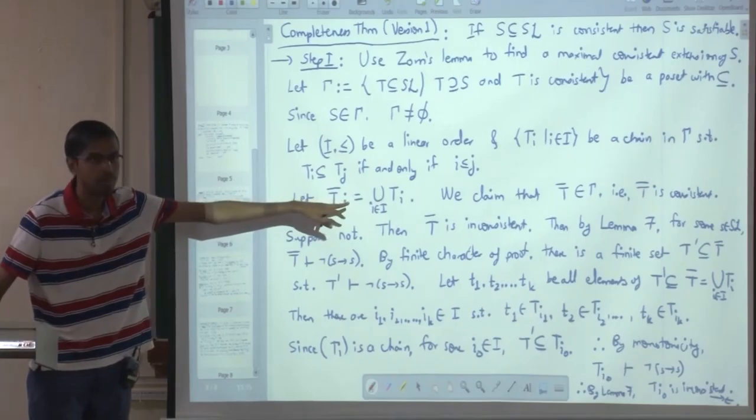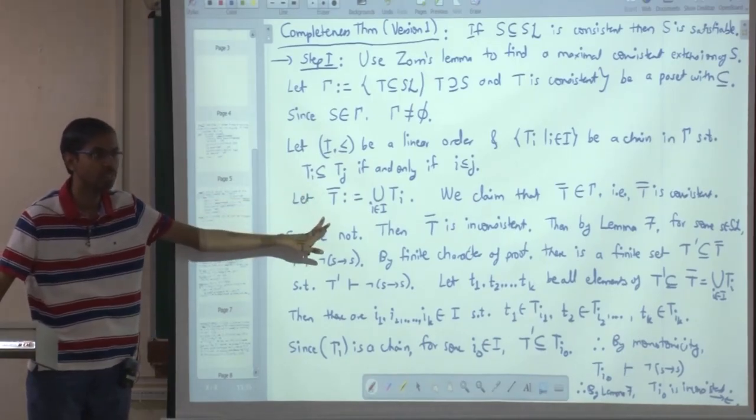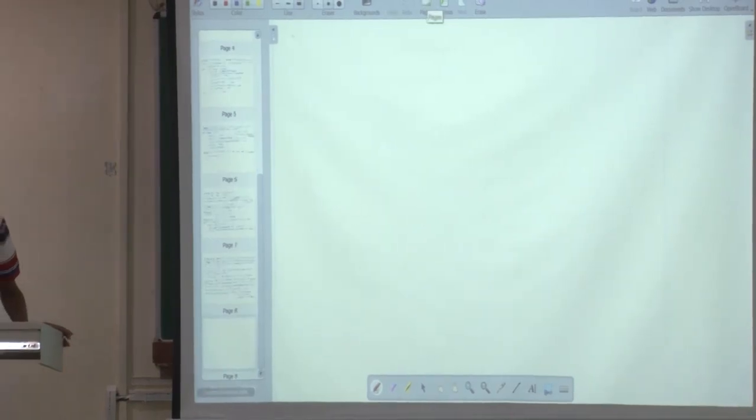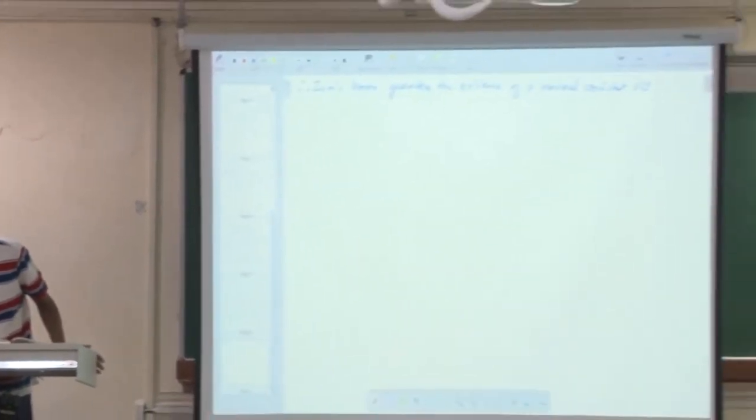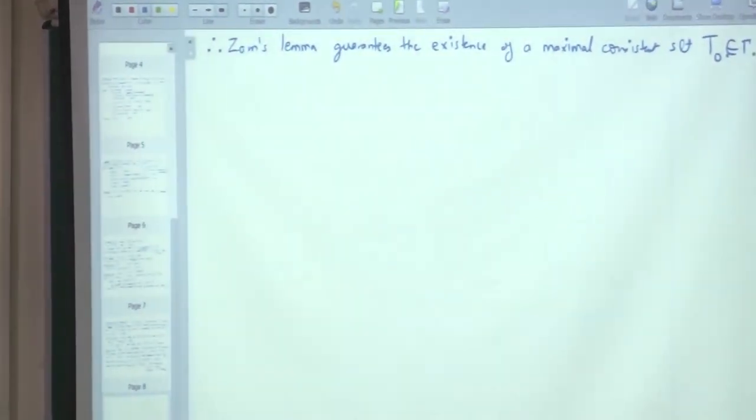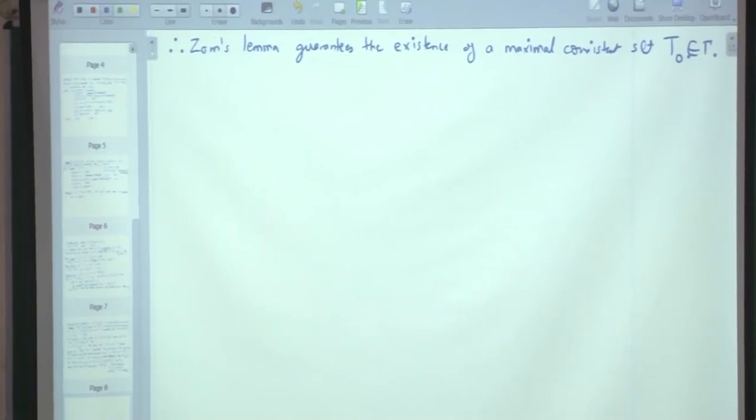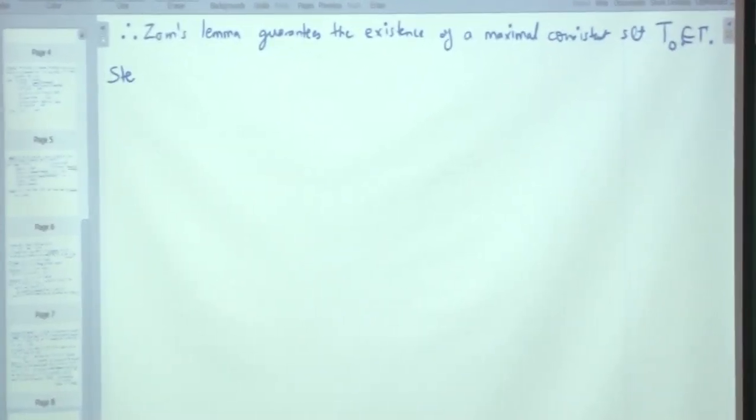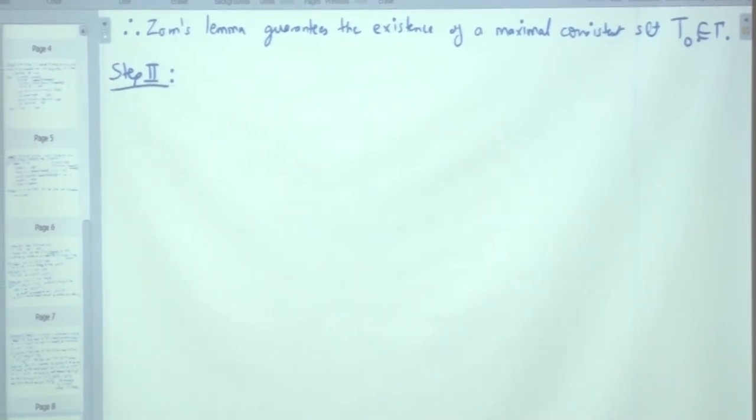Got this? So we have shown our claim. So every chain has a maximal element. Sorry, every chain has an upper bound. And therefore by Zorn's lemma. So I am just going to write this statement now. Therefore, Zorn's lemma guarantees the existence of a maximal consistent set T₀ in Γ. I mean it is in Γ, which means it is consistent and also contains S. Now just one more line, which is step two. And this is where we will pick off tomorrow.